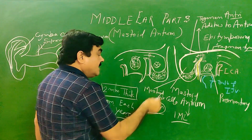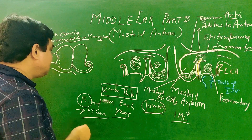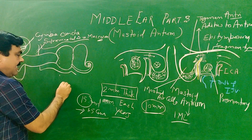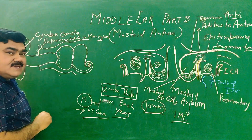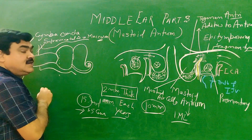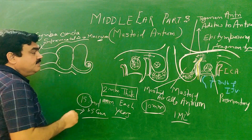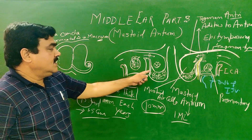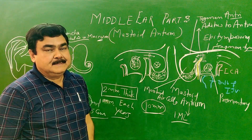The mastoid antrum and air cells are lined by simple squamous non-ciliated epithelium.